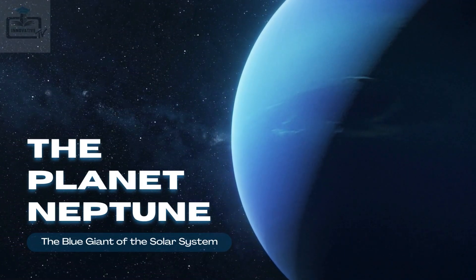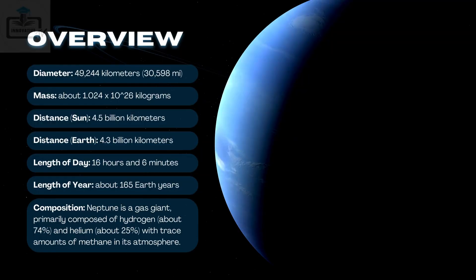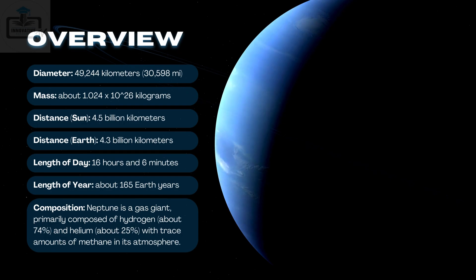8. The planet Neptune, the blue giant of the solar system. Overview: Diameter — 49,244 kilometers (30,598 miles). Mass — about 1.024 × 10^26 kilograms. Distance from Sun — 4.5 billion kilometers. Distance from Earth — 4.3 billion kilometers. Length of day — 16 hours and 6 minutes. Length of year — about 165 Earth years. Composition: Neptune is a gas giant, primarily composed of hydrogen, about 74%, and helium, about 25%, with trace amounts of methane in its atmosphere.